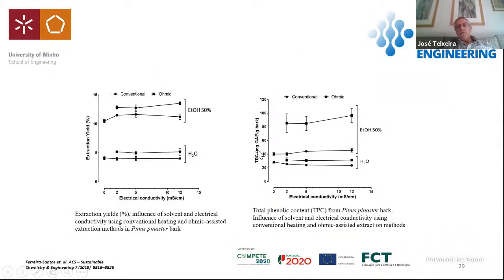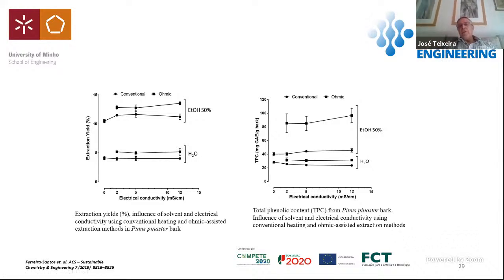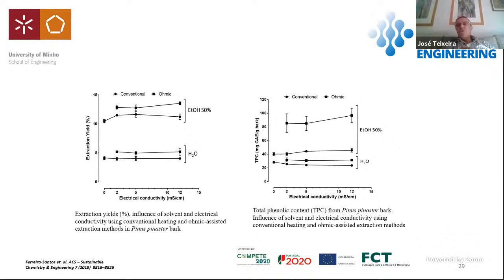Looking at total phenolic compounds extracted, we can see the effect when using water versus ethanol. The potential and the intensity of the advantage related to ohmic heating are really enhanced when using ethanol, suggesting that we can have a very interesting strategy to both increase the effectiveness and extraction yield, and on the other hand, select the type of compounds being extracted.